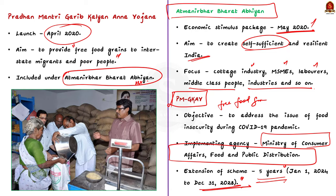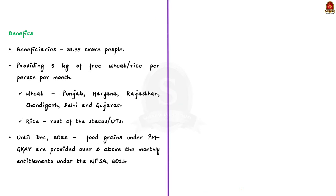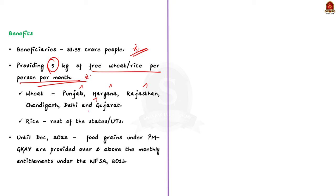Let us see the benefits of this scheme. Nearly 81.35 crore people are being benefited under the PMGKAY scheme. Under this scheme, the government provides 5 kg of free wheat or rice per person per month. Note that wheat has been allocated to six states or union territories: Punjab, Haryana, Rajasthan, Gujarat, Delhi and Chandigarh. The rest of the states will be provided with rice.